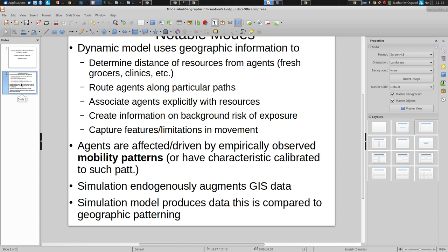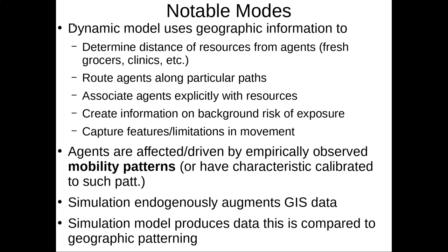Models — built in AnyLogic in particular, but agent-based models more generally — have, in addition to tapping into big data sources of various types with high velocity, high volume, variety, and high veracity data, they further are increasingly tied in with geographic databases. You can view this as a type of big data, and models are informed by data from the world on geographical quantities.